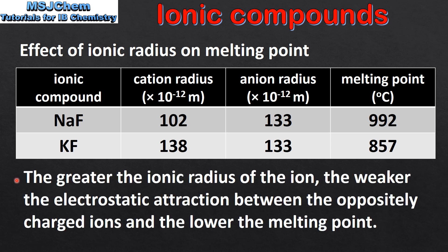So the greater the ionic radius of the ion, the weaker the electrostatic attraction between the oppositely charged ions and the lower the melting point. This explains why potassium fluoride, with its greater ionic radius for the cation, has a lower melting point.